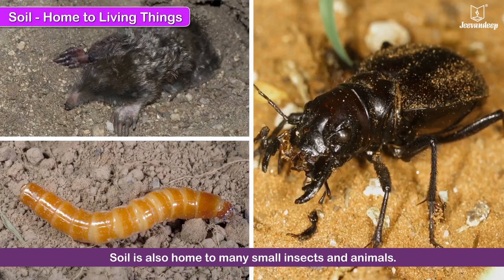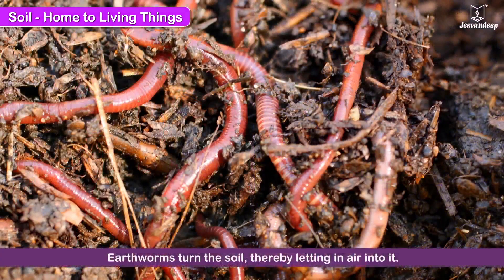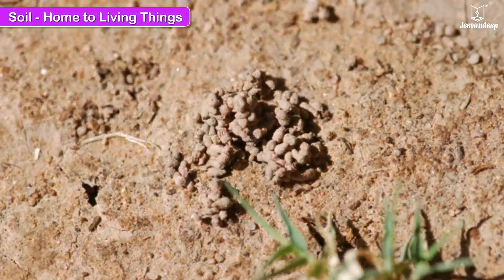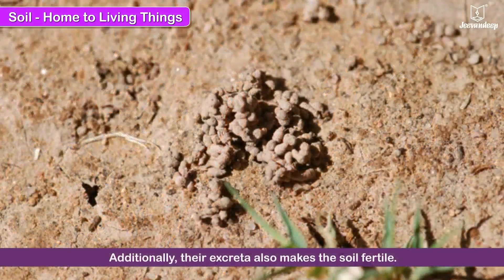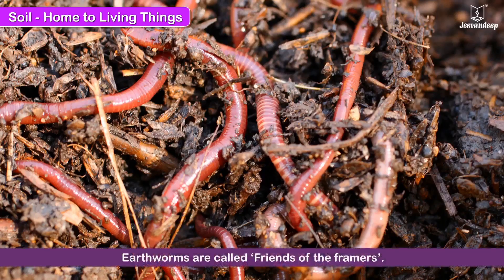Soil is also home to many small insects and animals. Slugs and snails eat bits and pieces of dead animals and plants present in the soil. Earthworms turn the soil, thereby letting in air into it. Additionally, their excreta also makes the soil fertile. Hence, they are called friends of the farmers.